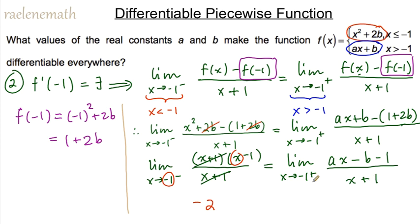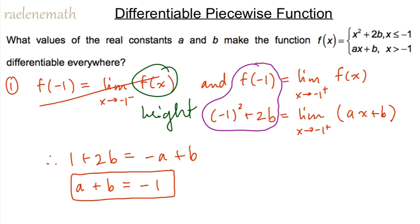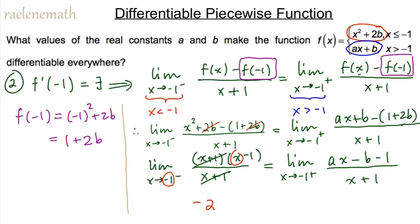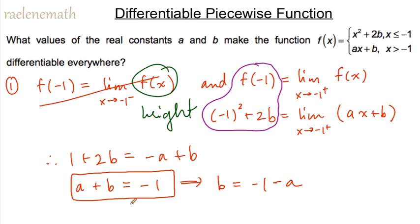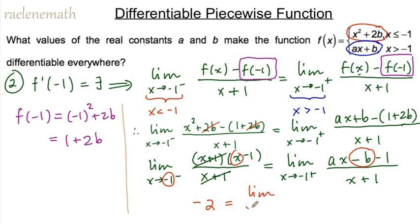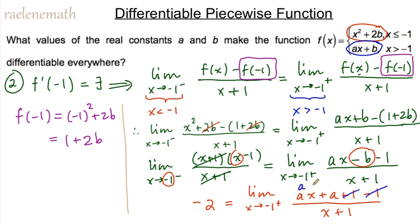Using Equation 1 to isolate b: b equals negative one minus a, so negative b equals one plus a. Substituting into the right-hand limit gives: the limit as x approaches negative one from the right of (ax plus a plus one minus one) over (x plus one). The ones cancel, and factoring a from ax plus a gives a(x plus one) over (x plus one). This yields a common factor of x plus one which resolves the zero over zero.